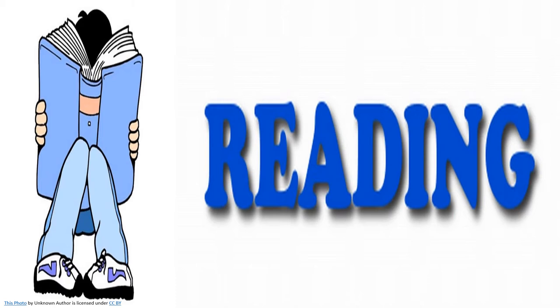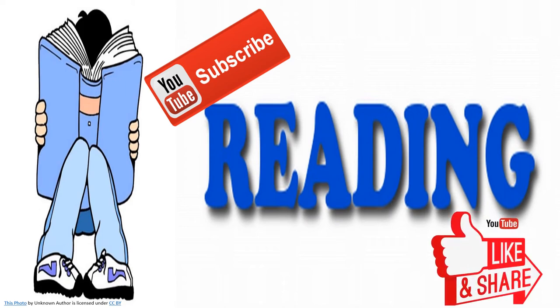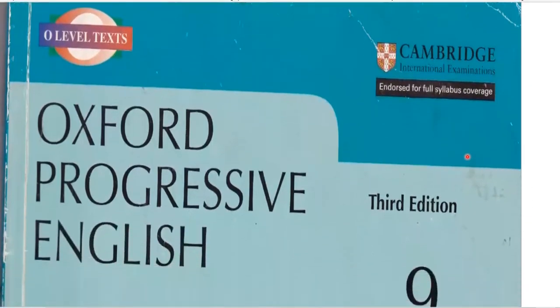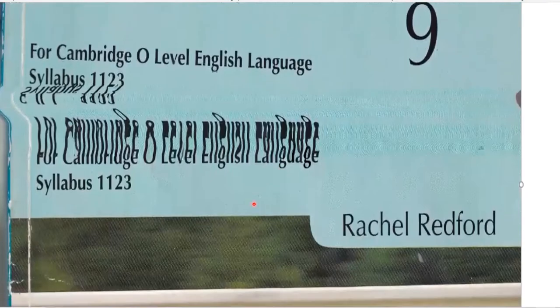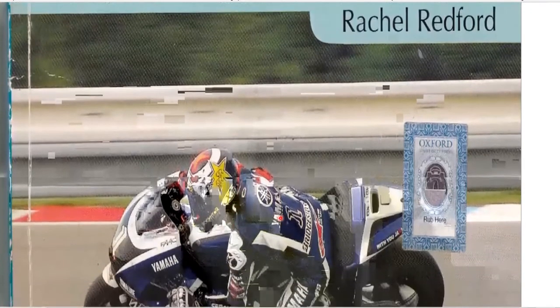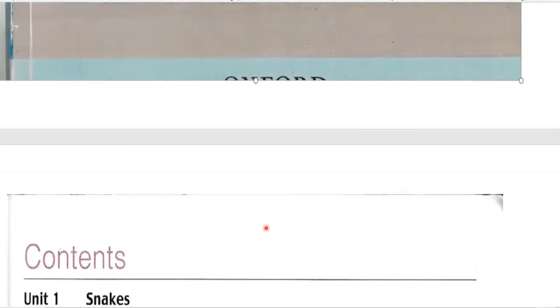Before we move on to the reading, I would request you to please subscribe to my channel and please like and share it with your fellows. Oxford Progressive Book is a book which is fully endorsed by the complete syllabus of Cambridge. It's easily available, and there is another book after this which is Oxford Progressive Book 10. This gives you a very good understanding and practice of doing comprehension.